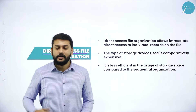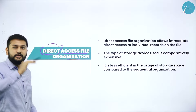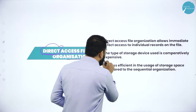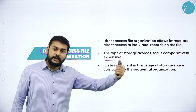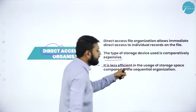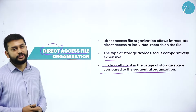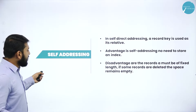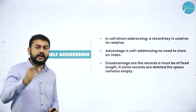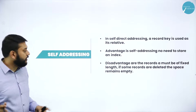In direct access file organization, the type of storage device used is comparatively expensive compared to serial organization. It is also less efficient in the usage of storage space compared to sequential organization. The third type is self-addressing file organization. In self-addressing, an indexing code is used — a record key is used as its relative record key.